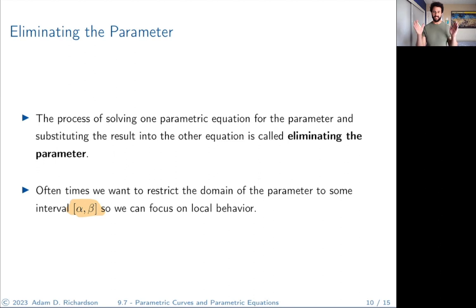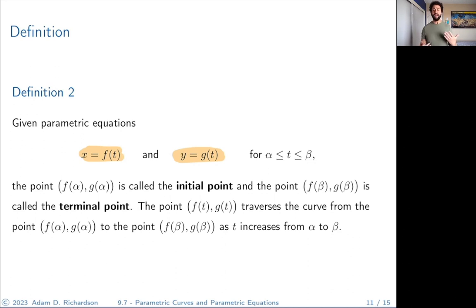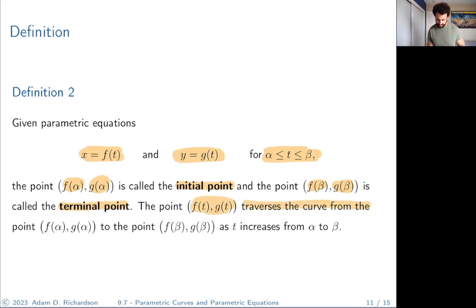Sometimes we want to restrict the domain of our parameter to some interval alpha to beta so that we can focus on local behavior. If we have parametric equations x equals f of t and y equals g of t, and restrict t between alpha and beta, then the point f of alpha comma g of alpha is the initial point — where the curve starts — and f of beta comma g of beta is the terminal point — where the curve ends. The point f of t comma g of t traverses the curve from initial to terminal as t increases from alpha to beta.